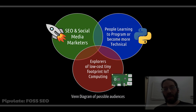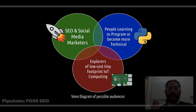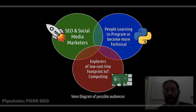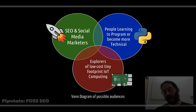Who does this appeal to? Social media marketers and SEOs who are avoiding paying for keyword position tracking software and other things. It could also appeal to people who are trying to learn to program or become a little more technical. Very related but distinct: people who are exploring the internet of things — tiny cheap hardware among other things — where you can have your code run in some interesting places.